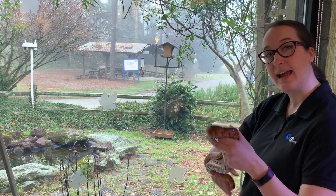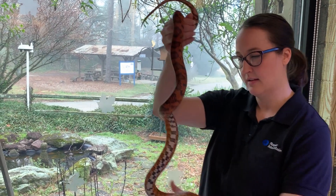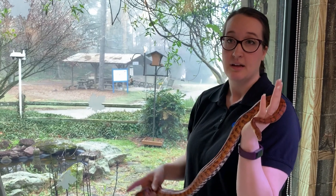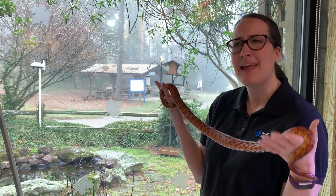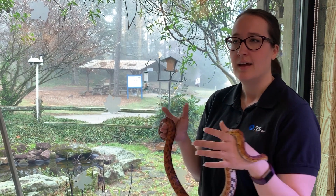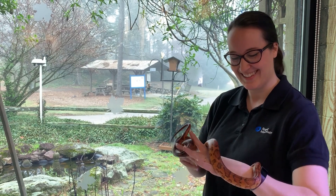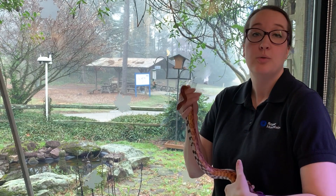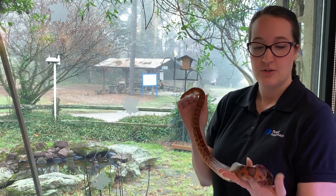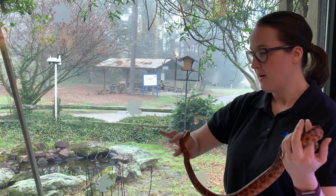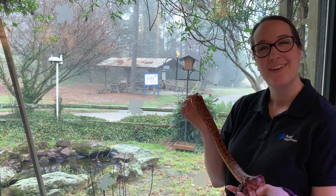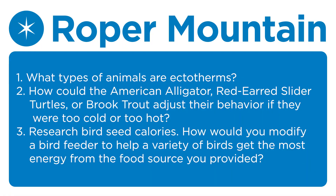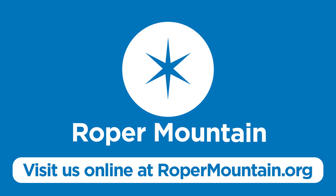As you think about your endotherms and ectotherms, think about how they regulate their heat. Mammals and birds have to regulate their heat — mammals will need to sweat or pant. You've probably seen a dog doing that if they get too hot. We can also add on layers if we need to, for us humans. So as you think about endotherms and ectotherms, adaptations, and how those animals might try to cool down or warm up so that they can do all the things their body needs to do — think about all these animals here at Roper Mountain Science Center and all those even in your backyard.